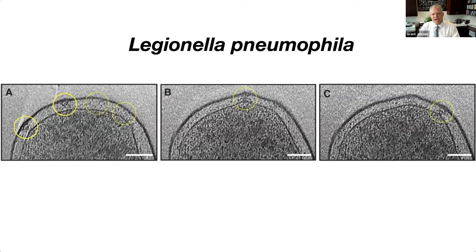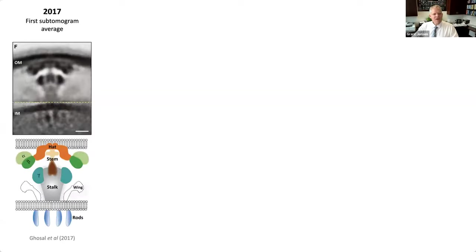These are the type 4 secretion system. There are a couple circled here; we're seeing different slices of them. Individual slices on a single tomogram are very noisy. But having realized we could get pictures of this type 4 secretion system, in 2017 we calculated our first subtomogram average.